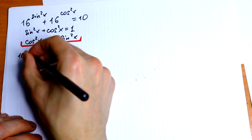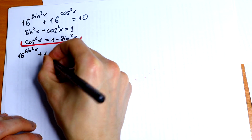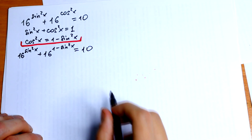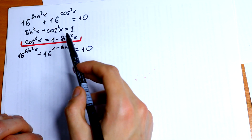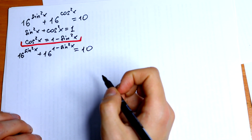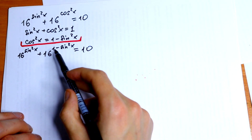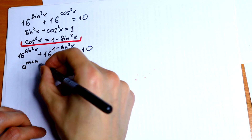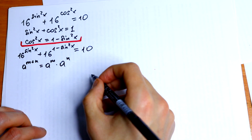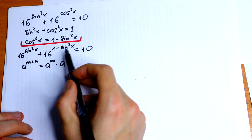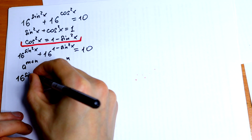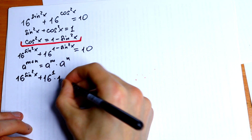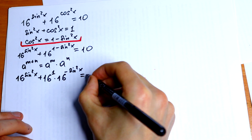So now we have 16 to the power sine squared of x plus 16 to the power (1 minus sine squared of x) equals 10. We just replaced cosine squared of x with that expression. Next, let's break this exponent using the rule: a to the power (m + n) equals a to the power m times a to the power n. So: 16 to the power sine squared of x plus 16 to the first power times 16 to the power minus sine squared of x equals 10.